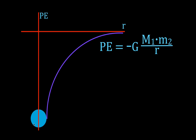This graph relates distance and potential energy. This is the Earth. The y-axis shows potential energy — here's zero, and all values below are negative, becoming more negative as you move down. On the x-axis we have the distance r away from the object. These are positive distances and negative potential energies. This purple curve is the graph of the potential energy — as the distance decreases, the potential energy also decreases, becoming more negative.